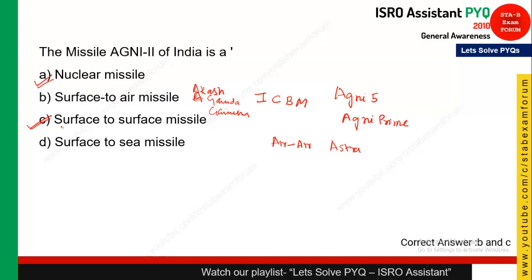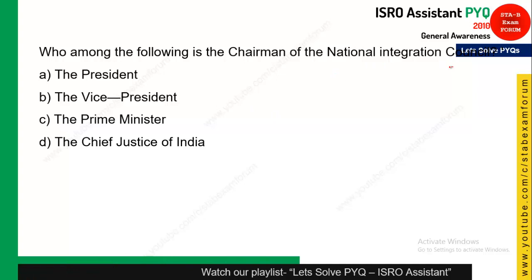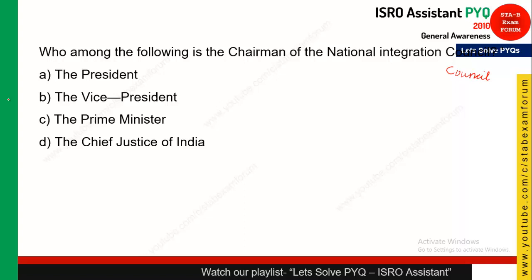Who among the following is the chairman of the National Integration Council? As you know, the National Integration Council was made during independence time and was established by our Prime Minister at that time, Pandit Jawaharlal Nehru. So option C is the correct answer — the Prime Minister made this National Integration Council and is the chairman of that council.